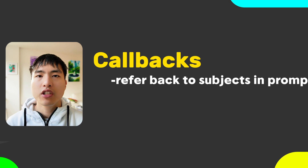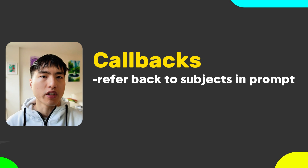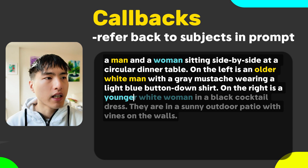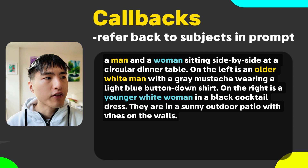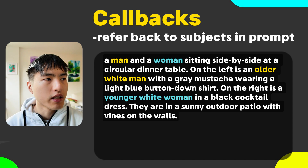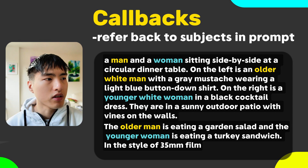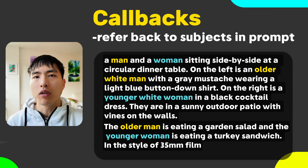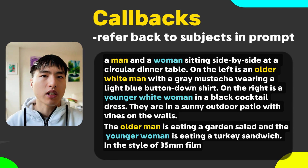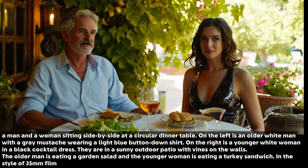A concept you should know is using callbacks in your prompt. This just means referring back to your subjects as you add more and more details. For example: 'A man and a woman sitting side by side at a circular table. On the left is an older white man with a gray mustache wearing a light blue button-down shirt. On the right is a younger white woman in a black cocktail dress. They're in a sunny outdoor patio with vines on the walls. The older man is eating a garden salad and the younger woman is eating a turkey sandwich.' Notice how I'm referring back to the man and woman multiple times as I add more details for each one individually. Callbacks are really important so that Midjourney knows exactly which subject you're adding details for.